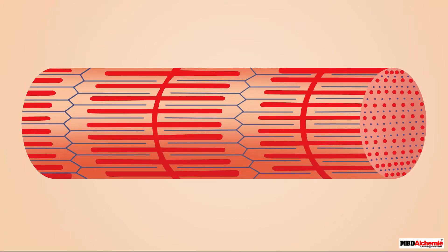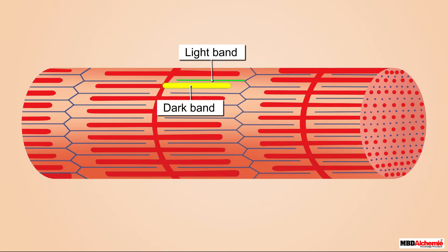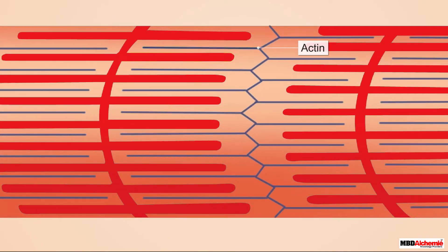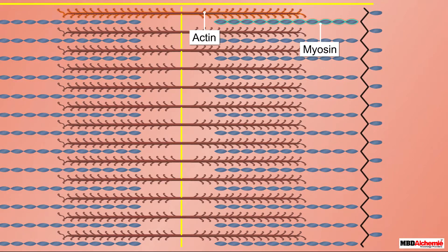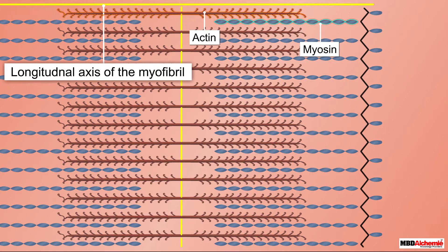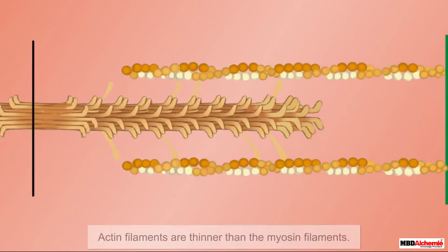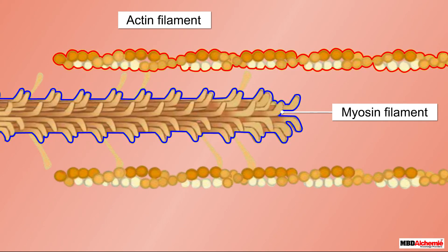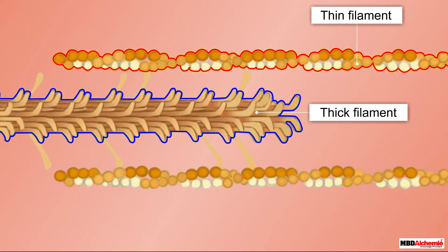Let's take a look at how a myofibril appears under a microscope. It appears striated with alternate light and dark bands. These alternate light and dark bands appear due to the presence of two important contractile proteins, actin and myosin, in the myofibrils. Actin and myosin are rod-like filamentous structures arranged parallel to each other and parallel to the longitudinal axis of the myofibril. Actin filaments are thinner than the myosin filaments; thus actin and myosin are also referred to as thin and thick filaments respectively.